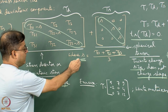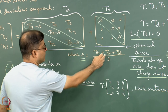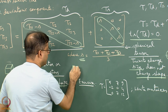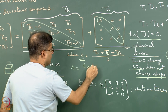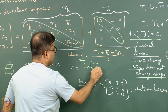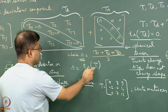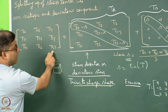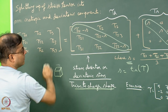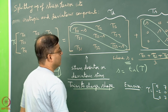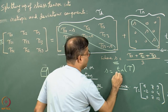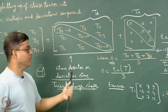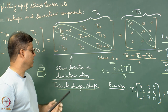S can also be written as tr(tau) / 3, meaning the trace of tau — the three diagonal elements added together — divided by 3. That is just another way of representing the same quantity.